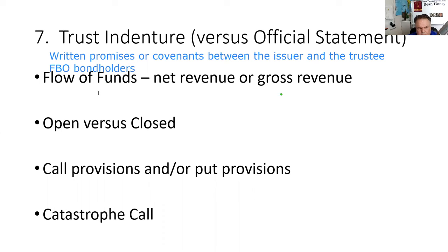Flow of funds is found in the trust indenture, and you should assume net revenue on your exam as that's the most common type. I won't be covering Eastern and Western accounts or components of the municipal spread here — I have a whole separate lecture on underwriting. If you're Series 7, I highly recommend going through that; it's a bit overkill for the SIE.